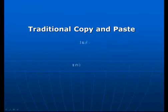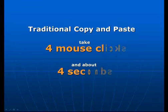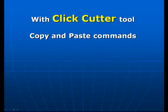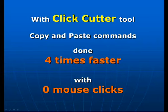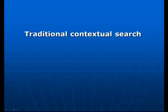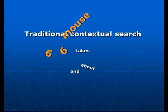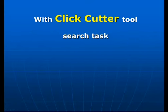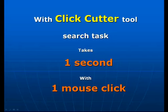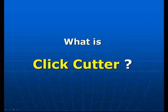So you can accomplish your tasks up to 10 times faster and with much less effort. For example, making a simple copy and paste takes 4 mouse clicks in about 4 seconds. With ClipCutter's automatic tool you can make copy and paste 4 times faster and with no mouse clicks at all. Another example: a simple context search online takes on average 6 mouse clicks and about 6 seconds of your time, but with ClipCutter you can do the same task in about 1 second and with just 1 click of a button. It's a real time saver.